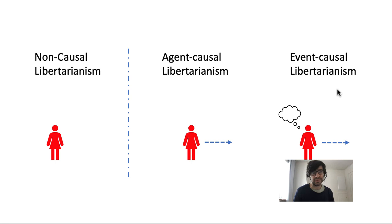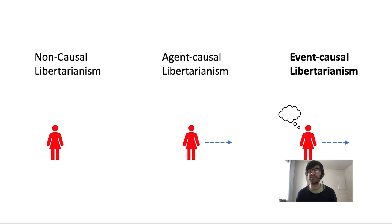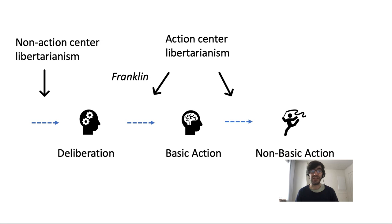Finally, non-causal libertarians hold that free will has nothing very much to do with how your action is caused — an action is free in virtue of somehow belonging to you in a non-causal way. This position, however, is not very popular and is rarely discussed. The version of libertarianism that Franklin focuses on is event-causal libertarianism, since Franklin assumes that agency reductionism is true. In this class we will also talk exclusively about event-causal libertarianism. Franklin points out that even if you are an event-causal libertarian, you still have choices about what kind of libertarian you want to be, and further distinctions have to do with how you solve the problem of location.